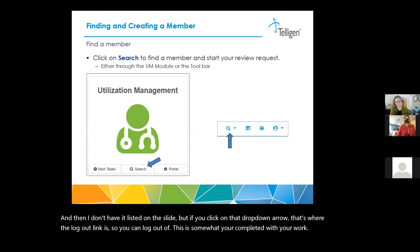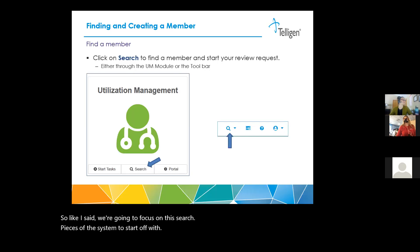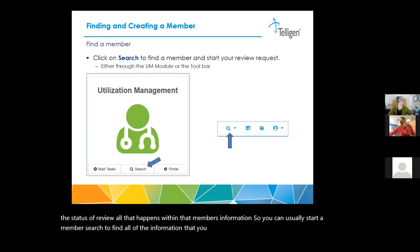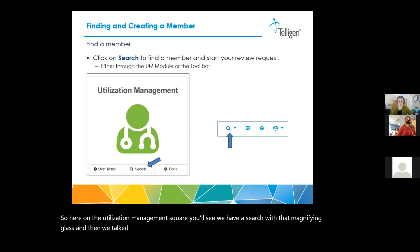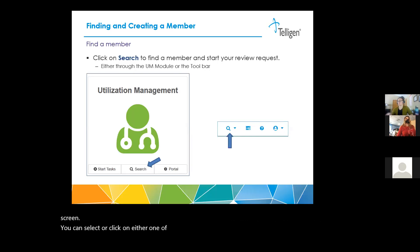We're going to focus on the search pieces of the system to start off with, because everything that happens — if you're submitting a new review or want to check on the status of a review — all of that happens within that member's information. So you usually start a member search to find all the information you need. Here on the utilization management square, you'll see we have a search with that magnifying glass. You can click on either one of those, and it will take you to our member search screen.